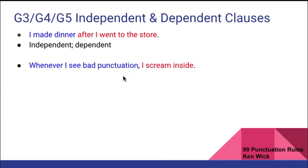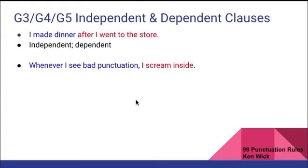Next sentence, two clauses. First clause: 'whenever I see bad punctuation' — subject and verb, begins with a subordinating conjunction, therefore it is a dependent clause. Second clause: 'I scream inside' — subject and verb, does not begin with a subordinating conjunction, therefore it is an independent clause.